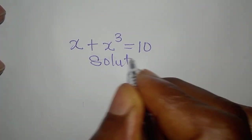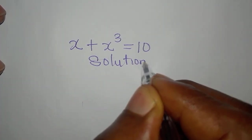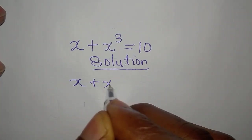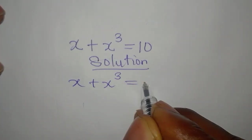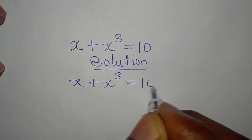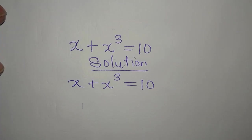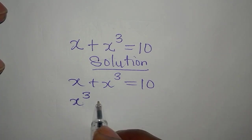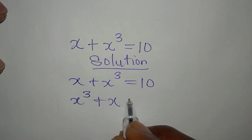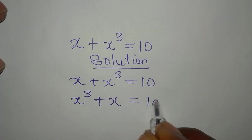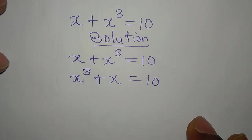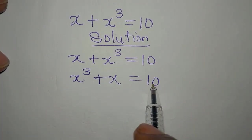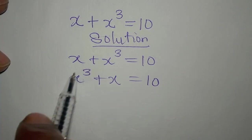Let's solve x plus x to the power of 3 equals 10. I'll rewrite this as x to the power of 3 plus x equals 10, and now see if 10 can exist in a useful form.